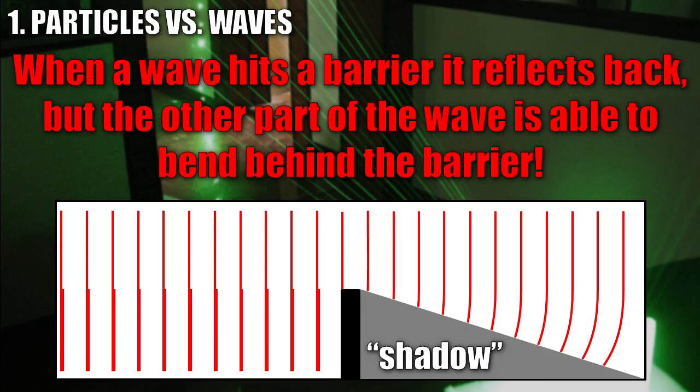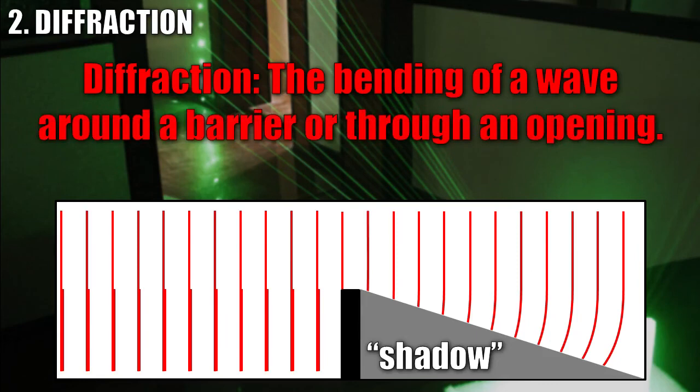We call this property of waves diffraction. Diffraction is the bending of a wave around a barrier or through an opening. You've experienced this in your everyday life. If you've ever been driving down a mountain and the radio signal cuts out, but then you drive a little bit further down the mountain and it comes back in again.